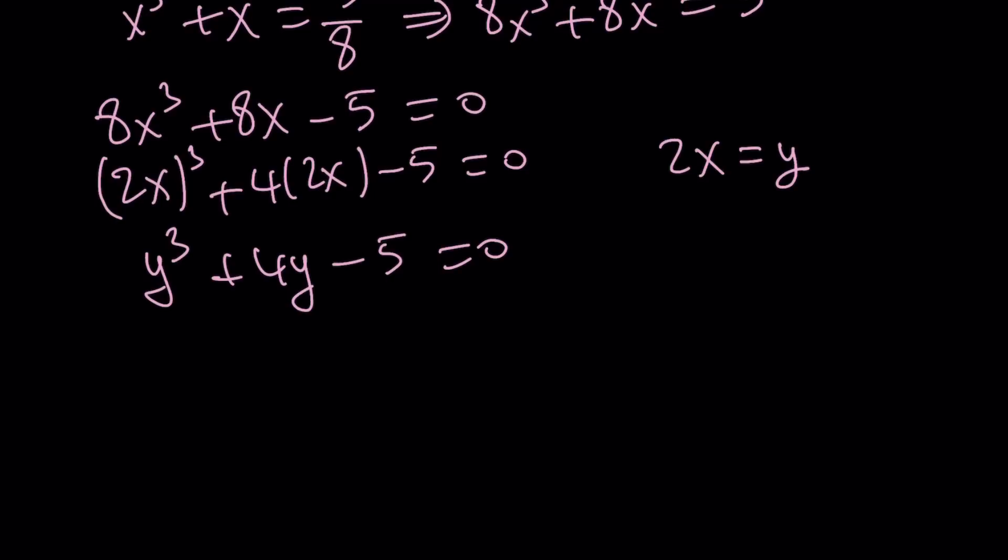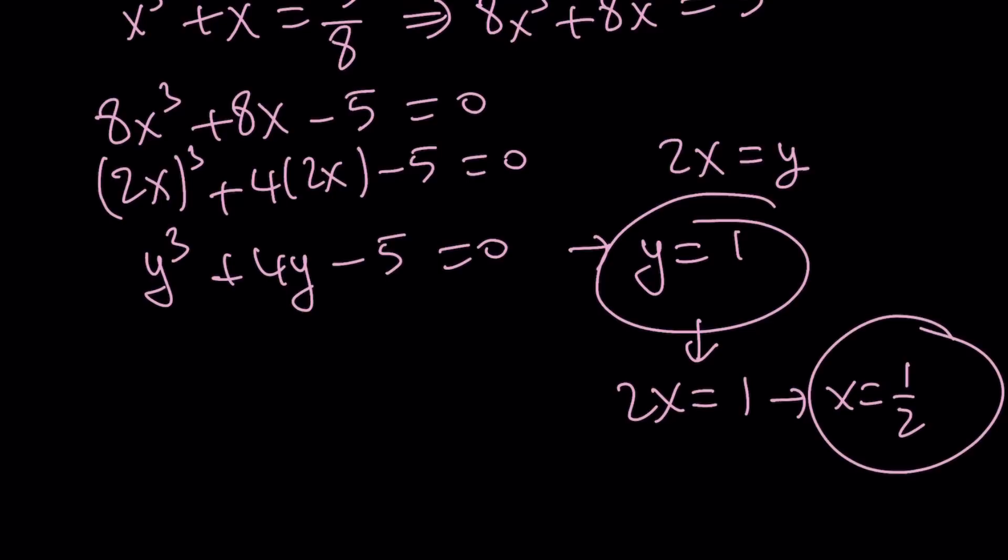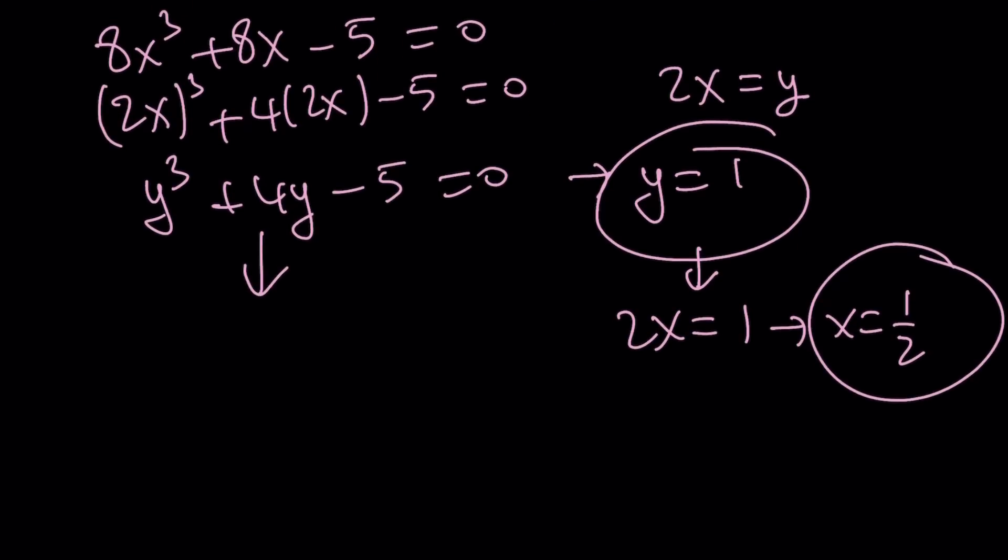That means y equals 1 is a solution. Remember, we talked about this before in many different videos, right? So if y is equal to 1, then we can just set 2x equals 1. And from here, we get x equals 1 half. But what about the other solutions? Let's go ahead and find out. So this is a cubic, and I know that y equals 1 is one of the solutions. Therefore, I can do the following. I can just go ahead and factor it in such a way that y equals 1 is a solution. So that means that I'd like to get y minus 1 as a factor. Does that make sense? Okay, great.